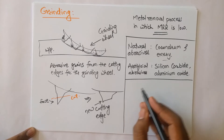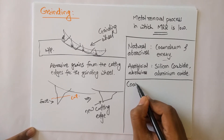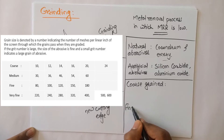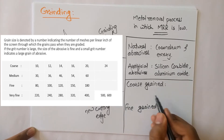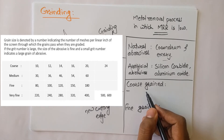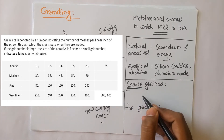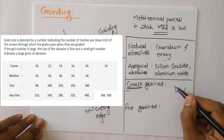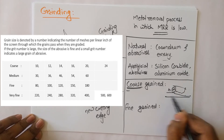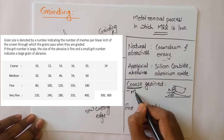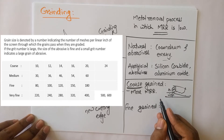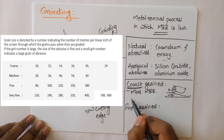Grinding wheels are of two types: coarse grained and fine grained. In coarse grained wheels, the material removal rate — the amount of material taken out from the workpiece — is more, because the grain size is big. Due to that, more material will be removed from the workpiece, giving a higher MRR. Coarse grained grinding wheels are used for soft materials.